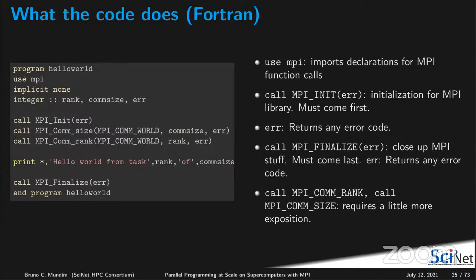Now let's go into the details of what the code does. In Fortran, 'use mpi' imports the declarations for the MPI function calls. MPI_Init is the initialization of the MPI library — using the telephone analogy, it connects your phone set into the line. Now it knows how many phones there are and what your phone number is. MPI_Init sets up how many tasks are in the communicator and what your rank is. MPI_Finalize closes everything and shuts down the data structures.